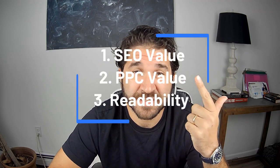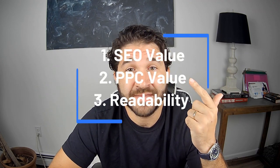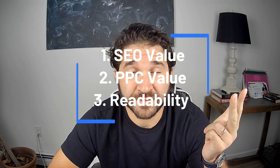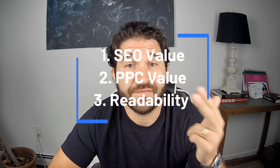There are three main buckets of parameters we look for when evaluating the written copy on a page. That is the SEO value, the PPC value, and then the general readability — or how effective we are at communicating to our audience.